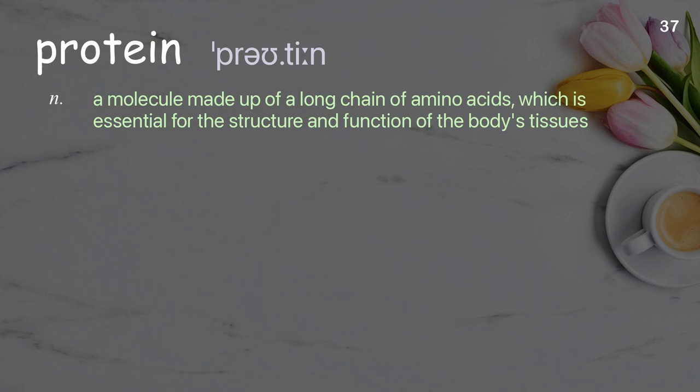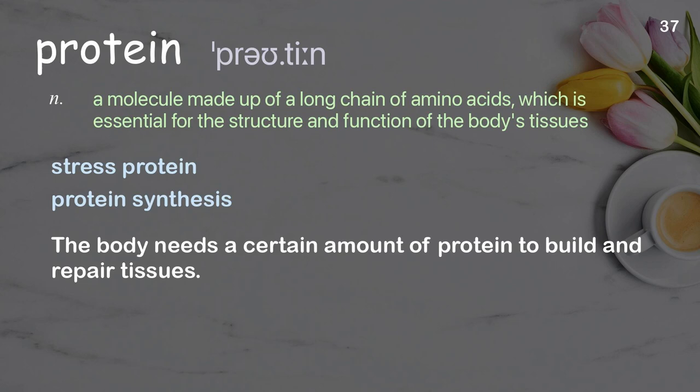Protein: a molecule made up of a long chain of amino acids, which is essential for the structure and function of the body's tissues. Examples: stress protein, protein synthesis. The body needs a certain amount of protein to build and repair tissues.